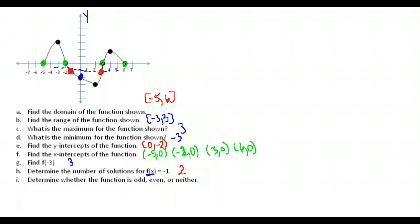Finally we're asked to determine whether the function is odd, even, or neither. This function doesn't have any type of symmetry — there's no pattern being repeated in either direction. So this function is neither odd nor even.